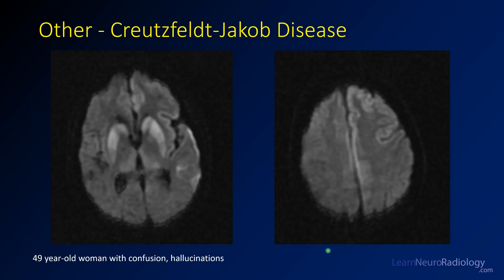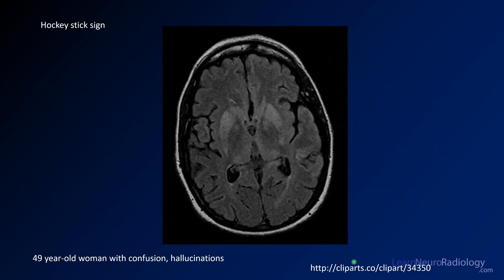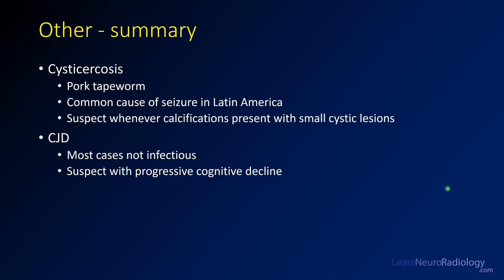Here is diffusion-weighted imaging from a 49-year-old woman with confusion and hallucinations. On diffusion, there are marked abnormalities in the basal ganglia involving the putamen, caudate, and the medial and dorsal thalamus. Coming up slightly, you can see areas of cortical diffusion abnormalities — cortical ribboning with T2 hyperintensity. On FLAIR, you see the same findings: involvement of the putamen and caudate. The hockey stick sign appears as a hockey-stick-shaped structure representing the medial thalamus and pulvinar together.